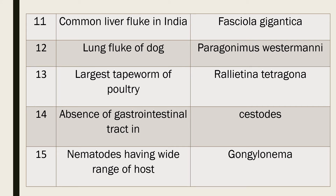Question 11: Very common liver fluke found in India. Answer: Fasciola gigantica. Question 12: Lung fluke of dog. Answer: Paragonimus. Question 13: Largest tapeworm of poultry. Answer: Raillietina tetragona.